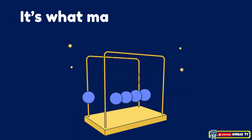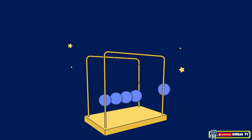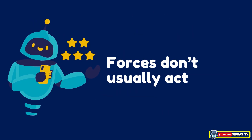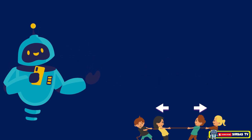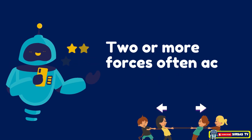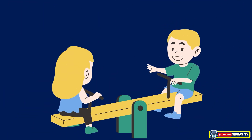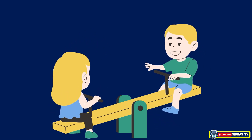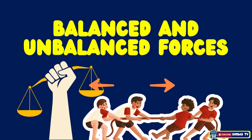A force is what makes things move, stop, or change direction. Now that we know what force is, here's something interesting — forces don't usually act alone. In real life, two or more forces act on the same object at the same time. When that happens, the forces can either balance each other or not, and that's where we get the two main kinds of forces: balanced forces and unbalanced forces.